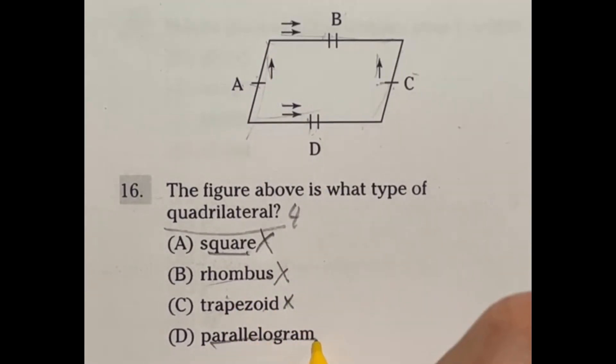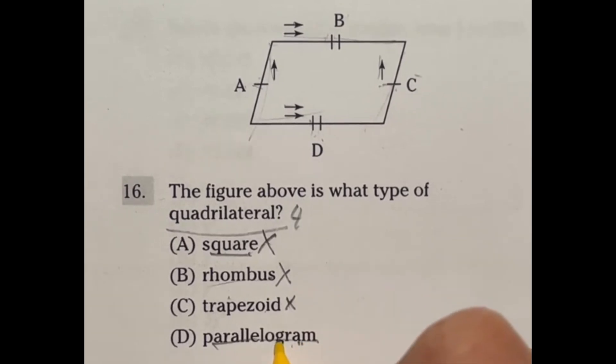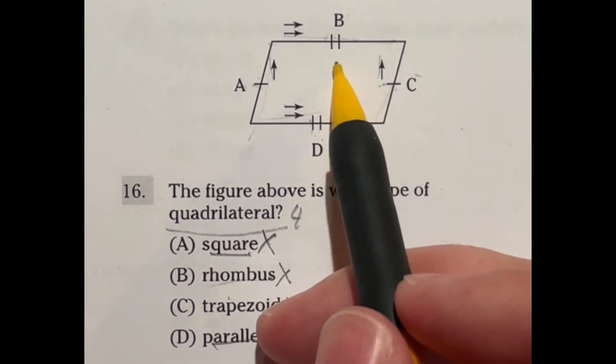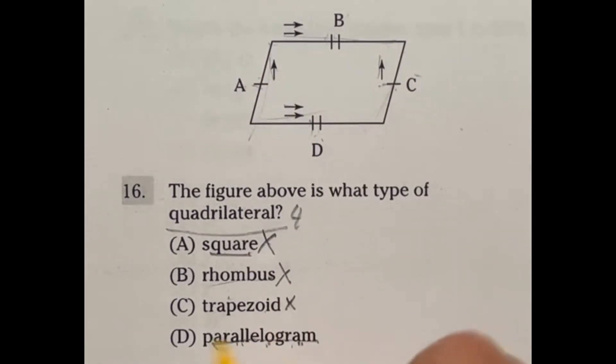And a parallelogram means that both sets of sides have to be parallel to each other. Now as a consequence of that, they also end up being equal, meaning that all of these are going to help us define answer D, a parallelogram.